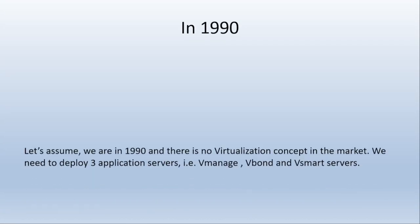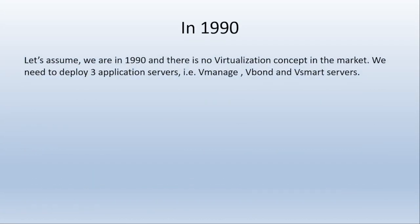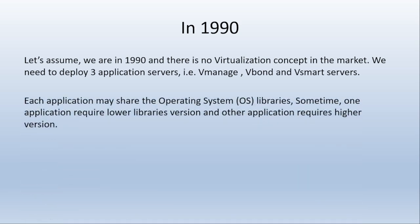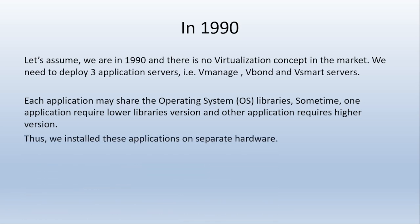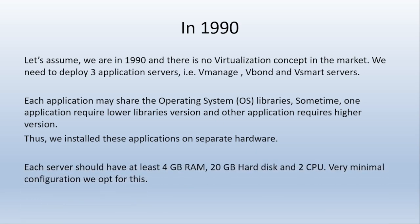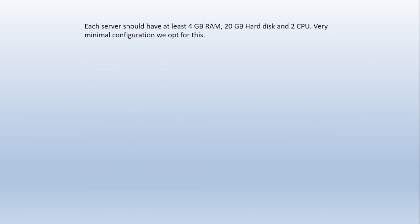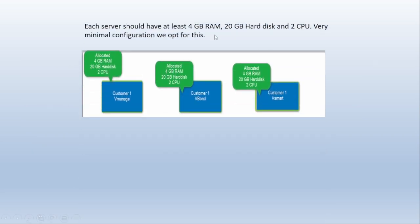Let's assume we are in 1990 and there is no virtualization concept in the market. We need to deploy three application servers for one customer. Each application may share the OS library files, but sometimes one application requires a lower library version and another requires a higher version. Thus we install these applications on separate hardware. Each server should have at least 4GB RAM, 20GB hard disk, and two CPUs — a very minimal configuration for this example.